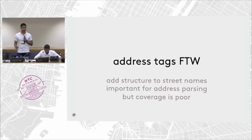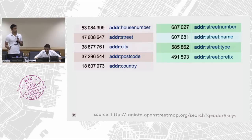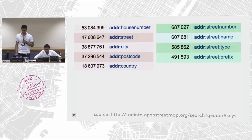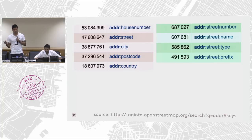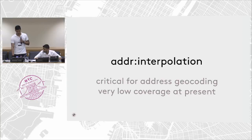Address tags are what makes an address geocoder tick — they give structure to addresses that most geocoders use. These are some of the address tags commonly used by a geocoder. Ideally all nodes should have complete address tagging, but we don't live in an ideal world. House number, street, city, postcode, and country are pretty straightforward. But the address street can be further broken down into street number, street name, type, and prefix, which is really important — that's the rich data a geocoder can take advantage of. Unfortunately, the coverage is really poor.